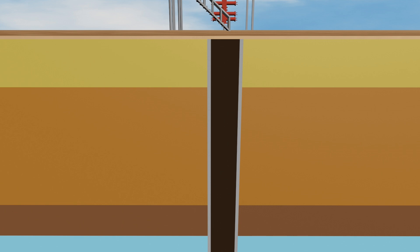In conventional wells, perforation involves creating small holes in the casing and cement, typically in the reservoir zone, to allow oil or gas to flow into the wellbore. This is usually done using a perforating gun.